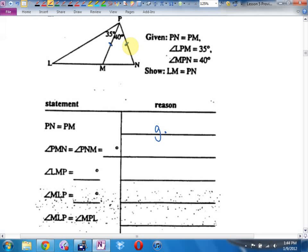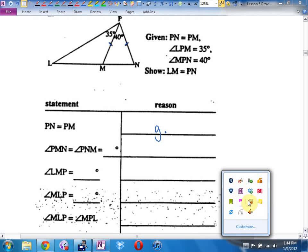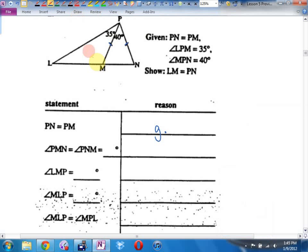Then it says, angle PMN equals angle PNM equals how big. This angle equals that angle equals how big. So these two angles are the same. That's what this is. How big is each of these angles? Convince me. So each of these, this is 70, this is 70, this is 70, because it's an isosceles triangle.